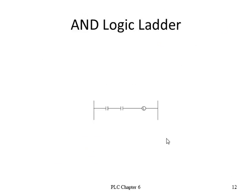In ladder logic, this would be A and B inputs going to output X. If I push A alone, nothing happens. If I push B alone, nothing happens. If I do nothing, nothing happens. When I hit A and B both, the light comes on. That's AND.